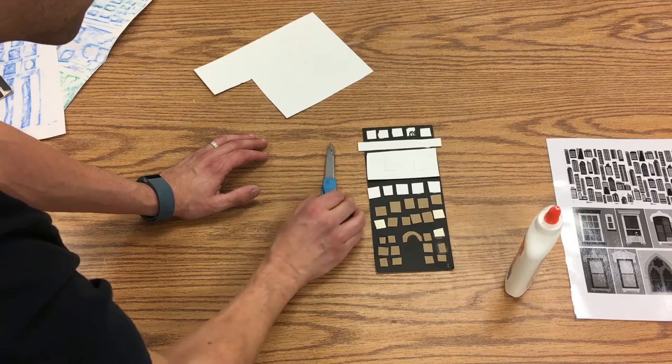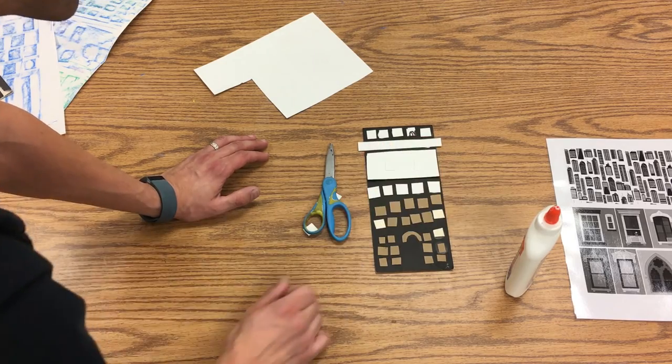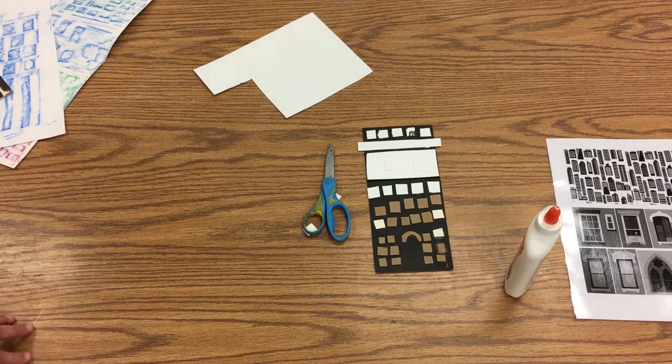Of course the first thing I did was write my name on the back before I even got started. So that's how we're going to make our textured buildings so we can all have a city together.